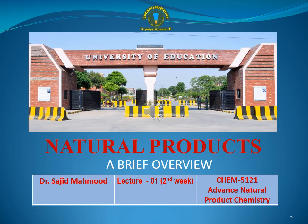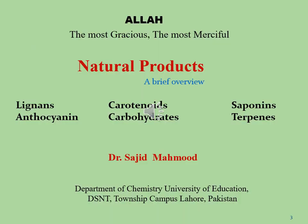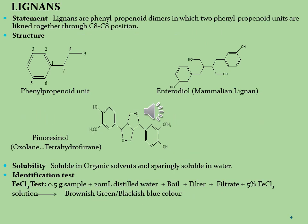Bismillahirrahmanirrahim. Dear students, have a nice day. Hope you will be fine and best of your health. This is Dr. Sarjid Mahmoud from the Division of Science and Technology, University of Education. Today we are talking about a brief overview of natural products. This is our second lecture about the classifications of natural products. In the previous lecture, we discussed alkaloids and steroids. Now we are talking about lignans, carotenoids, saponins, anthocyanins, carbohydrates, and terpenes.